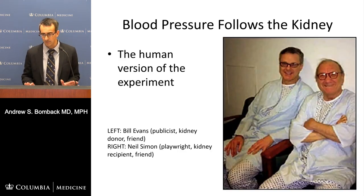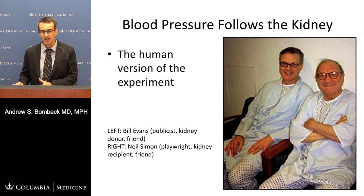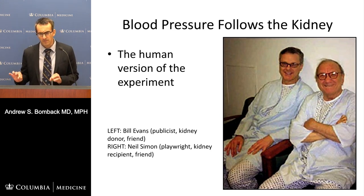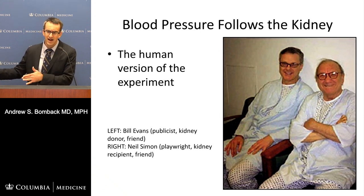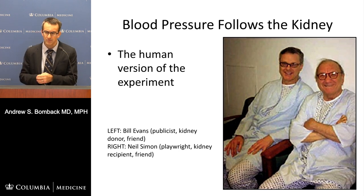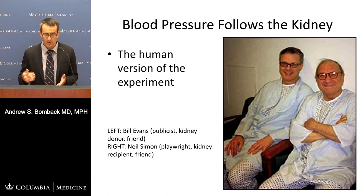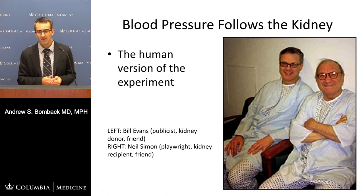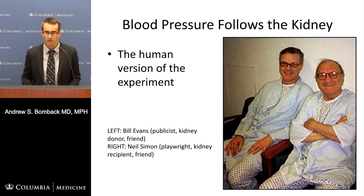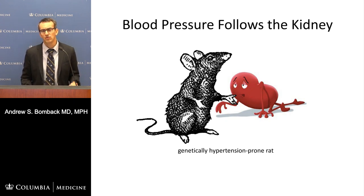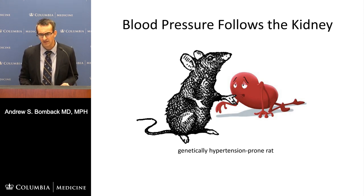We perform this experiment in humans through kidney transplants. A famous example covered in the New York Times: playwright Neil Simon received a kidney from his publicist Bill Evans. If a dialysis patient with four or five blood pressure medications — whose kidney was lost due to hypertension — receives a kidney from a young, healthy individual that works perfectly, they may need no blood pressure medicines at all when leaving the hospital with normal kidney function. Blood pressure again following kidney function.